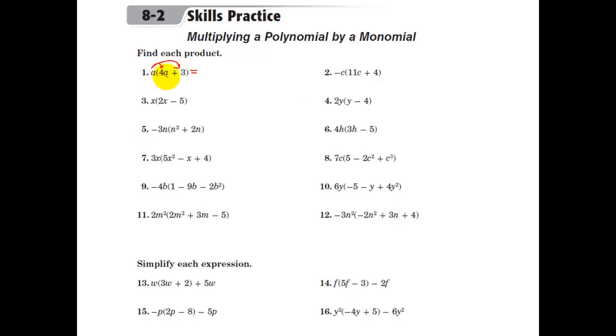So a times 4a. There's a 1 in the front of the a. So 1 times 4 is 4. a times a is a squared. When we multiply two things with the same base, we add the exponent. Plus a times 3 is 3a. So first one, very easy.